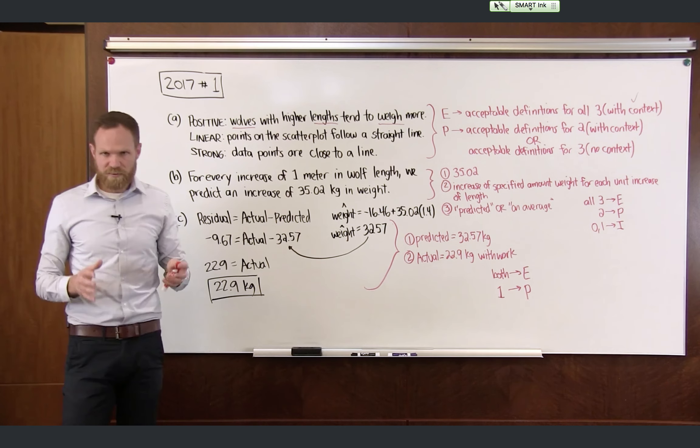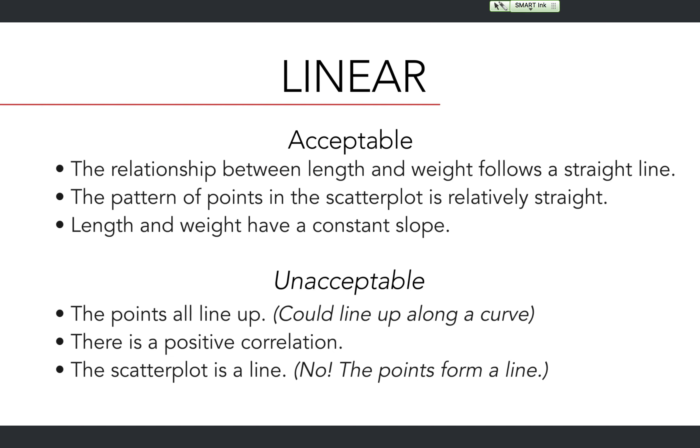Now let's take a look at acceptable and unacceptable responses for linear. First, let's start with acceptable responses. The relationship between length and weight follows a straight line. The pattern of points in the scatter plot is relatively straight. Length and weight have a constant slope. And here are some that are not acceptable for describing linear. The points all line up because they could line up all along a curve. There is a positive correlation. The scatter plot is a line. It's not the scatter plot that is a line. It's the points within the scatter plot that form a line.